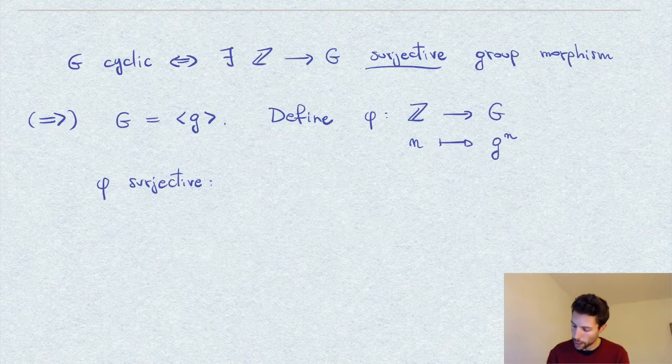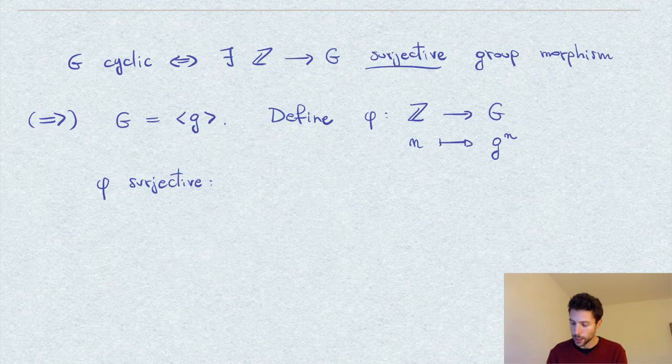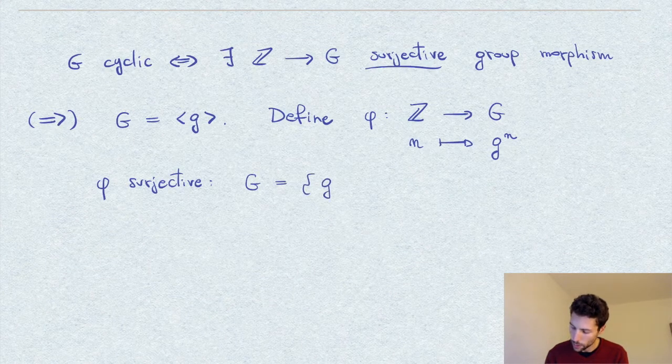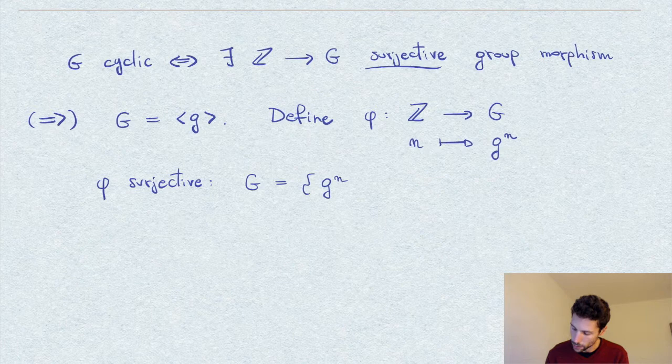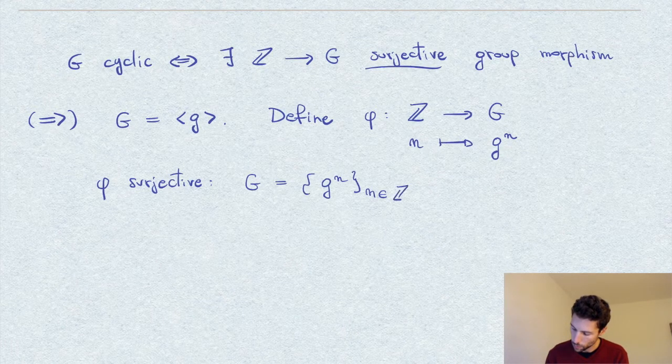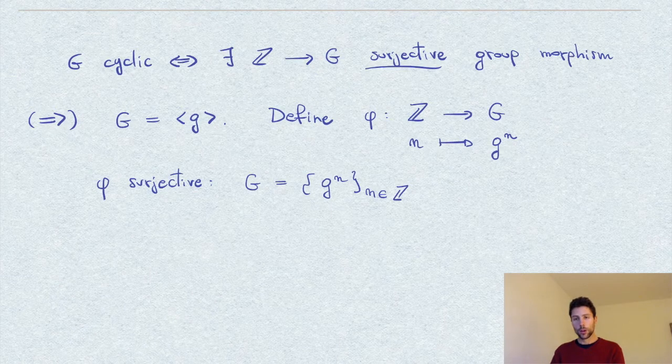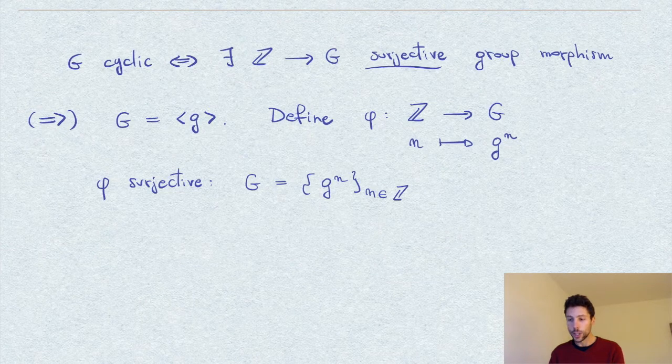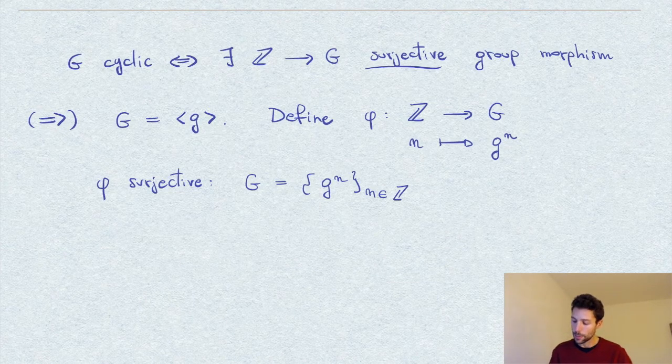By hypothesis, G is cyclic, and so it is precisely equal to the set of powers of the element g, and therefore whichever element we pick in G, it has to be expressed as the power of g, and the map is surjective.